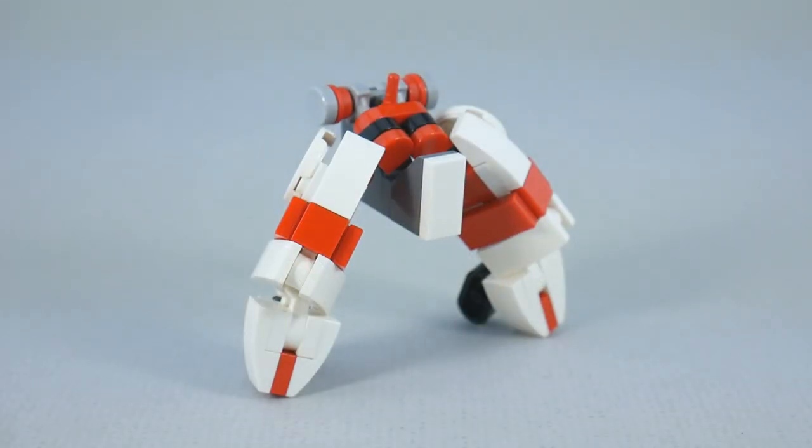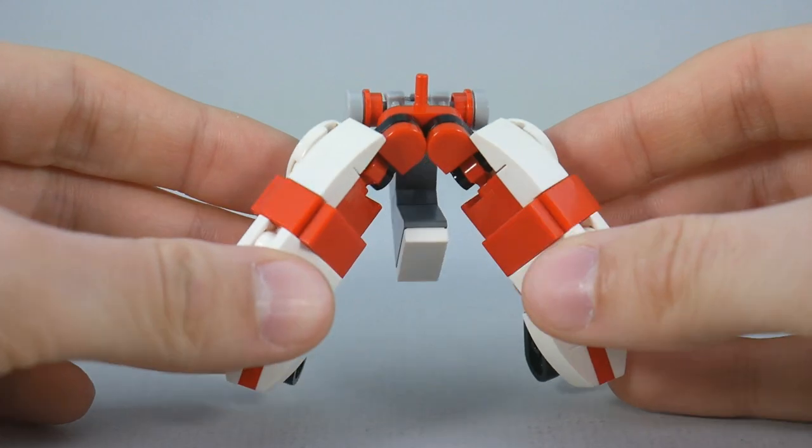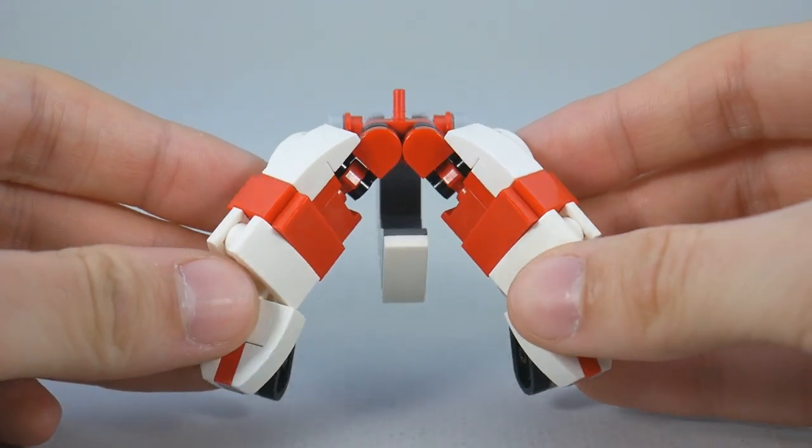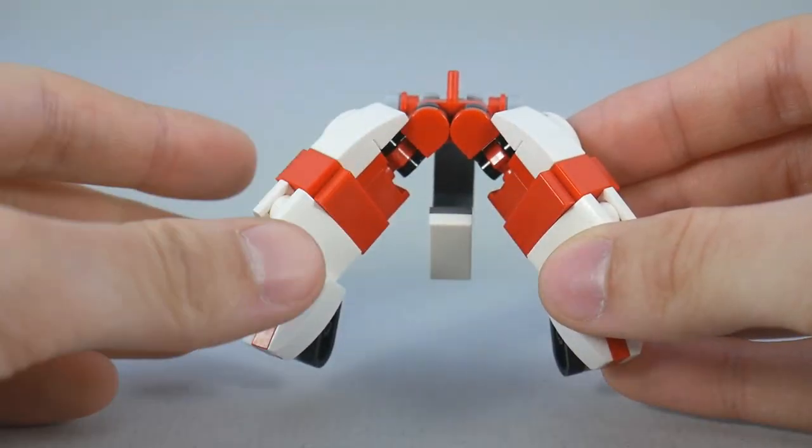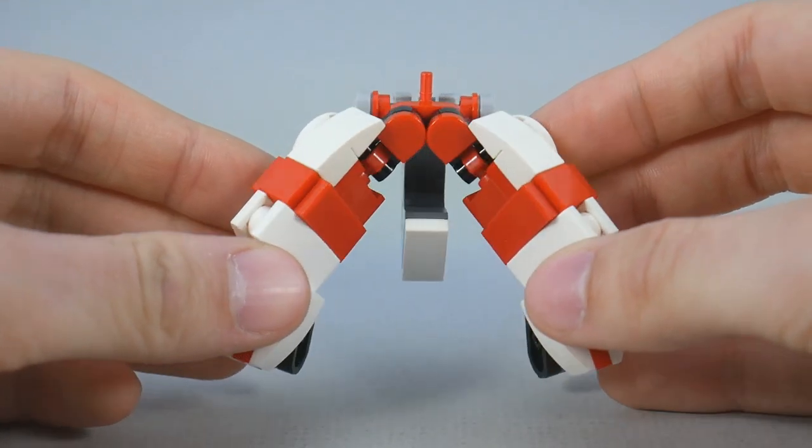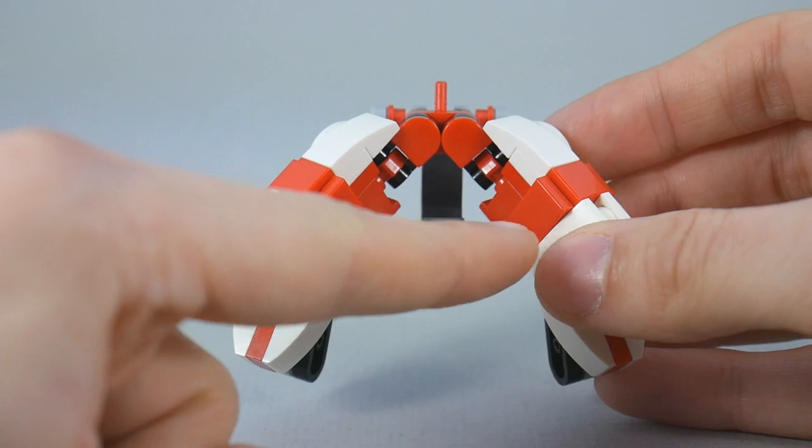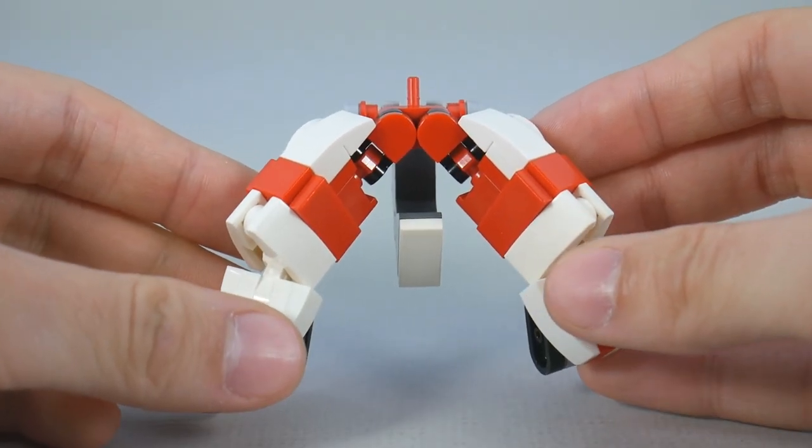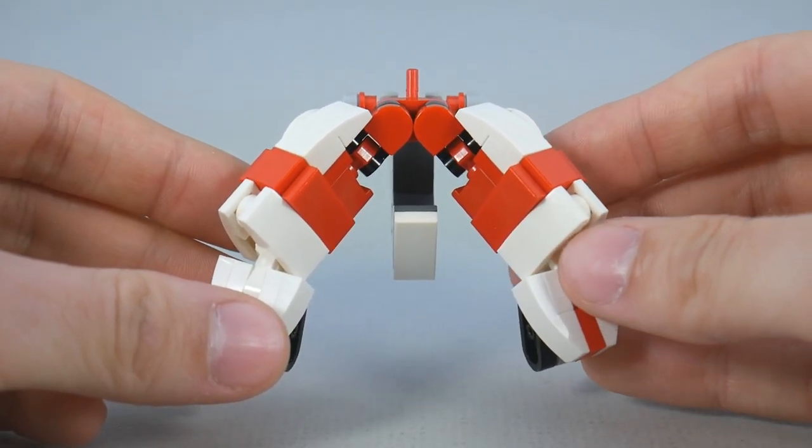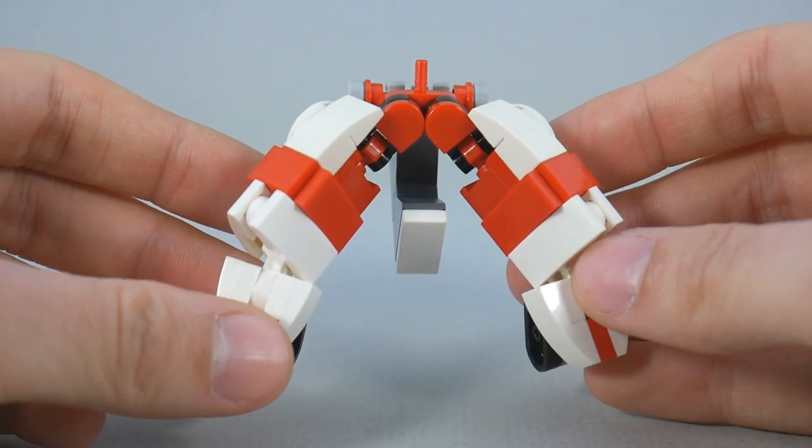Now, the pilot's legs actually fit inside of the mechs, so I couldn't very well use normal minifigure legs because they don't split apart. Instead, I had to brick build an approximation. This middle portion here is meant to represent Gallo's red pants with a black harness draped over them, and I think it looks pretty okay. Unfortunately, the red kind of blends into the red armor of the mech itself, but if you know what you're looking at, I think it makes sense.